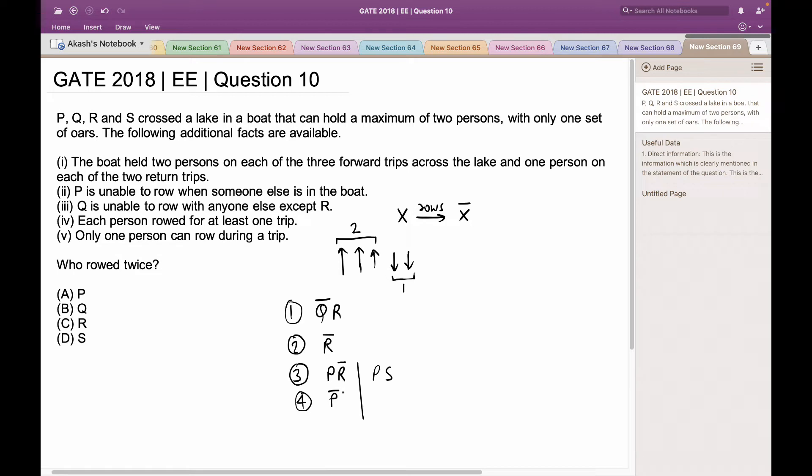Because if I take R to collect back S, then P would be the person who has never rowed even once, which is violating the condition number 4. So P has to return in the fourth trip. And after the fourth trip, P can collect S with S rowing the boat, because there is no condition that is binded by S. And there is a condition binded by P, which says that P is unable to row when someone else is in the boat. With these set of conditions, I can see that R has rowed twice.